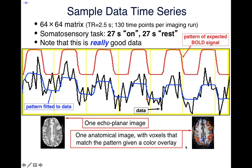Here's some sample data. In my experience of 20-plus years dealing with fMRI data, I find that many people have never actually looked at single-voxel time series data. This was relatively old data — about 15 years old — a 64-by-64 matrix of imaging at about 3-millimeter resolution. The time repetition, TR, between successive images is 2.5 seconds, and there were 130 points per imaging run. The task was 27 seconds on and 27 seconds off. This is really good data — a primo voxel in a solid data set.